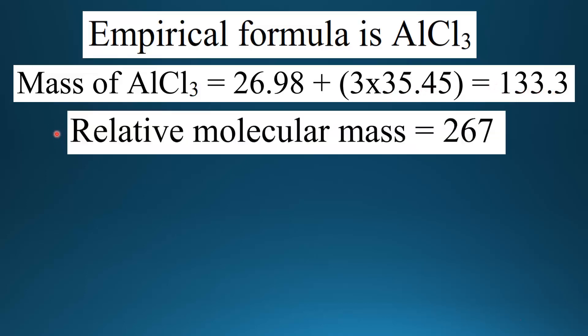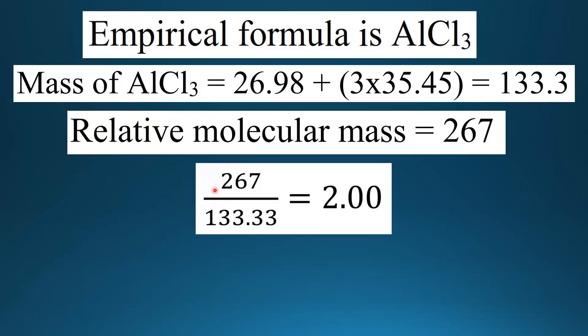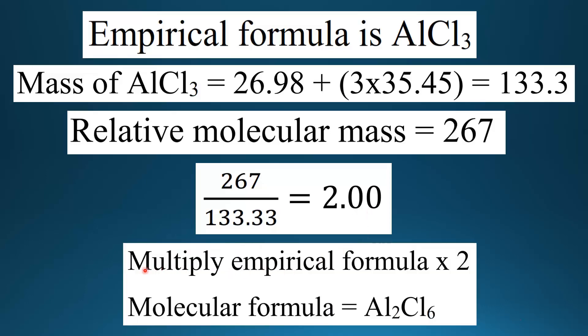The relative molecular mass is 267. The next step is to divide the relative molecular mass by the mass of the empirical formula. So 267 divided by 133.3 gives approximately 2.00. The last stage is to multiply the empirical formula by 2, which gives us a molecular formula of Al2Cl6.